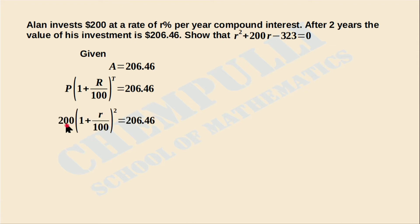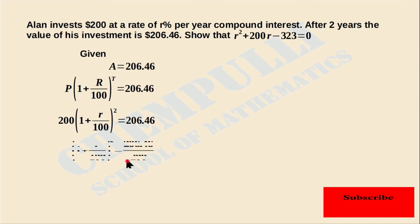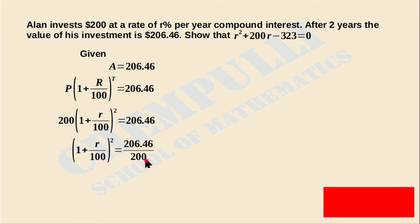Substituting, we get: 200 × (1 + R/100)² = 206.46. The operation here is multiplication, so taking 200 to the right-hand side makes it division: (1 + R/100)² = 206.46 / 200.